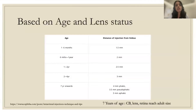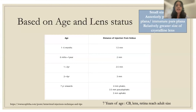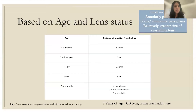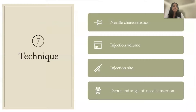The distance from the limbus varies by age and lens status. In infants (1–6 months), inject 1.5 mm from the limbus; 6 months to 1 year: 2 mm; 1–2 years: 2.5 mm; 2–6 years: 3 mm. At 7 years, the eye reaches adult size. From that point: in phakic patients (crystalline lens in situ), inject 4 mm from the limbus; in pseudophakic patients, 3.5 mm; in aphakic patients, 3 mm.